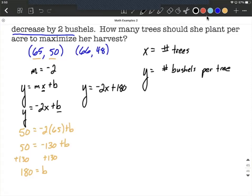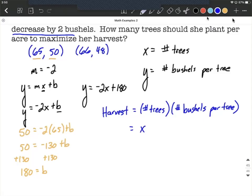Now the end goal of this is we want to maximize our harvest. So how would we calculate our harvest? Well, the harvest is going to be however many trees we plant per acre, so the number of trees multiplied by the number of bushels per tree. In our case, the number of trees was represented with X. And the number of bushels per tree, I'm going back up to Y equals negative 2X plus 180. And I'm going to call this H of X for harvest.